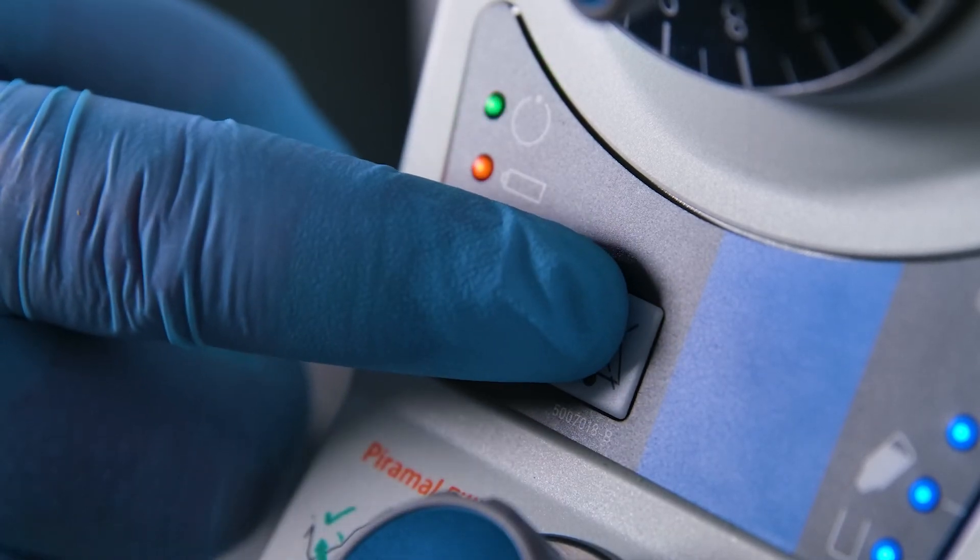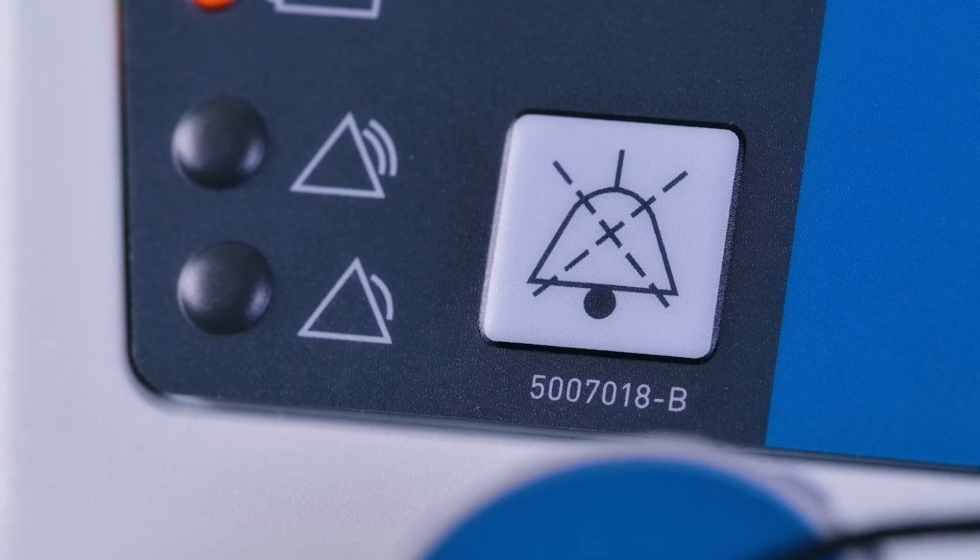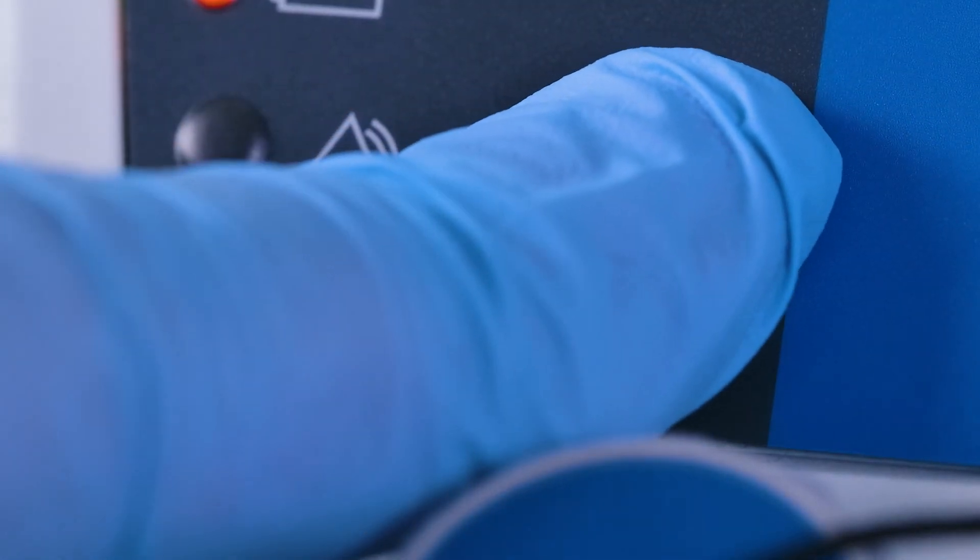Using the alarm mute control. Press the audible alarm mute control. The audible alarm will be silenced for 2 minutes. Press the control again to cancel the silence command.